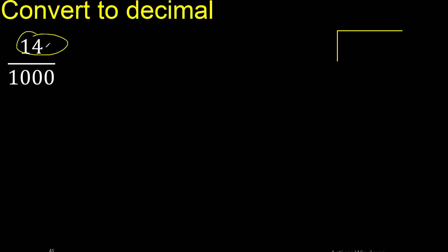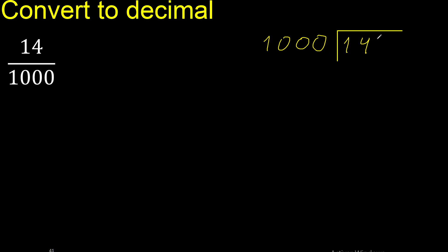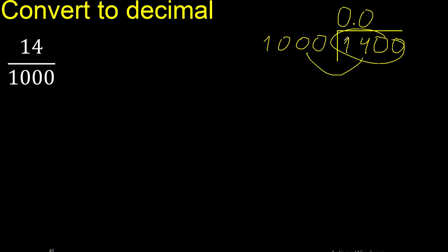14 divided by 1000. 14 is less than 1000, therefore complete with 0 here — 0 point. 140 is less, therefore 0. Point is here, not less, therefore: 1000 multiplied by which number is nearest to 1400 but not greater? Multiplied by 2 is greater, therefore multiplied by 1 is 1000.